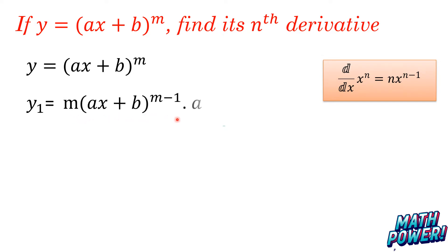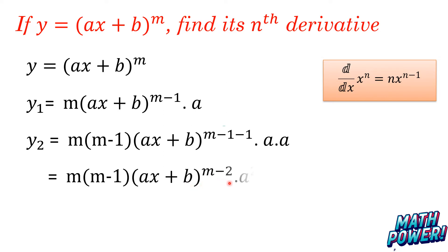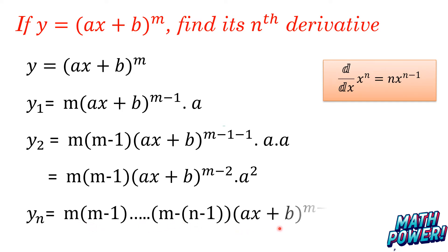When we differentiate y1, we get m(m-1)(ax + b)^(m-2) times a^2. Then yn will be m(m-1)...(m-n-1) times (ax + b)^(m-n) times a^n. This is our final answer. We have special cases — let's see them in the next slide.